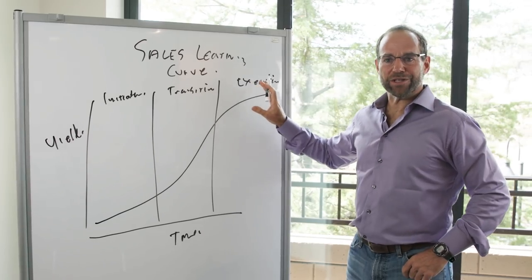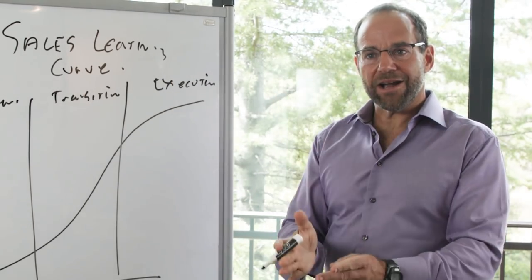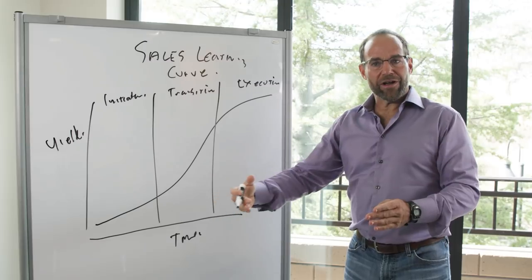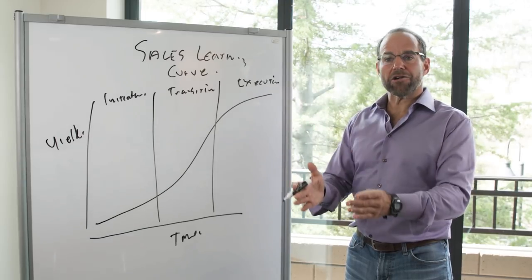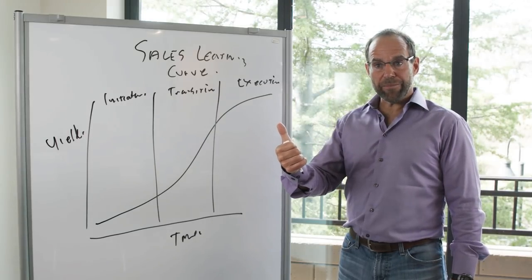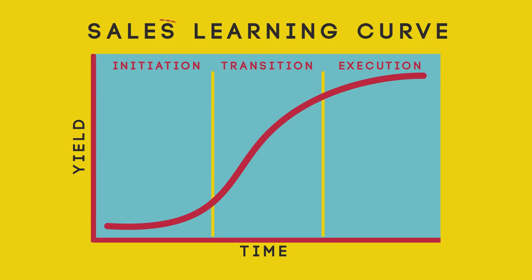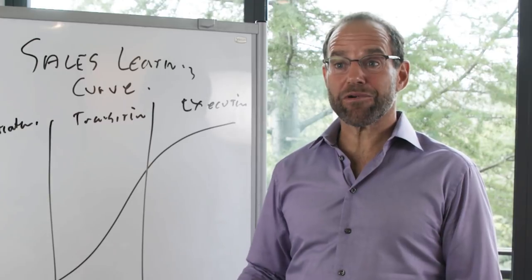The execution phase is when we have what's called a repeatable sales model. A repeatable sales model means I can hire a salesperson, hire another, hire another, and I will know exactly the yield of that salesperson on a repeatable basis. If I hire a person who costs $200,000 a year, I'll know how quickly they can ramp and how much money they'll bring in. In the initiation phase, we don't know any of that — we don't know how long it takes to ramp, how much money they'll bring in, or even if our product can be sold.